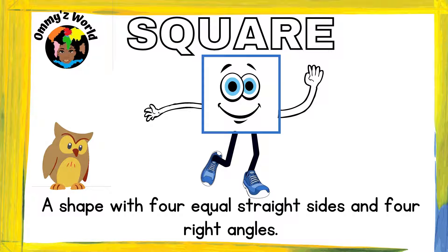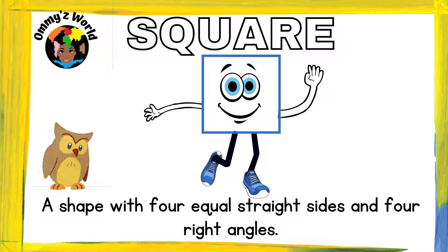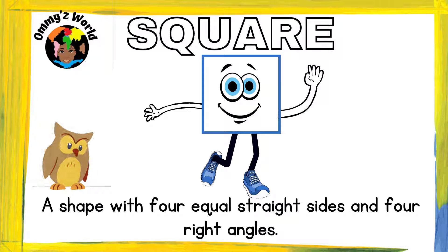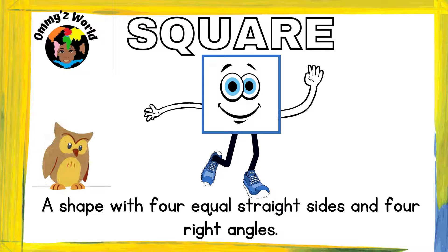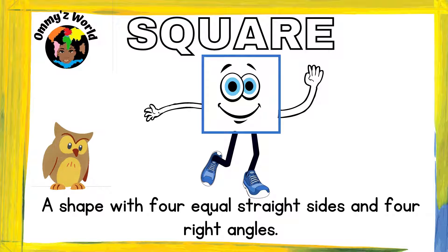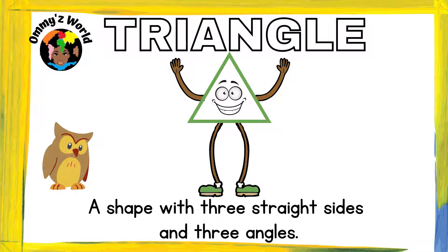The first shape we're going to talk about is a square. A square is a shape with four equal straight sides and four right angles. I'm sure you've seen this shape all around your house.